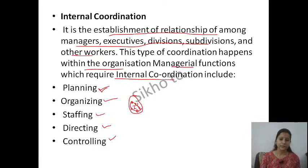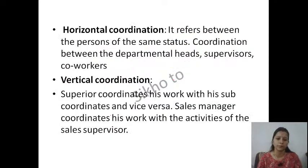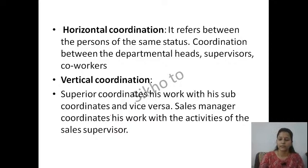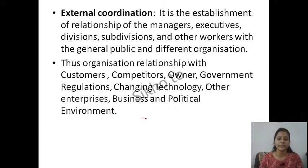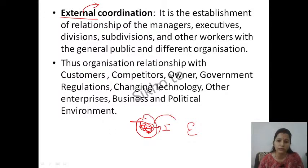Next is external coordination। External word से ही समझ में आता है कि यह बाहर वाला है। Internal यानि अंदर, external यानि बाहर। तो बाहर वालों के साथ जो आपका coordination होगा that will be the example of external coordination। It is the establishment of relationship of the managers, executives, divisions, subdivisions and other workers with the general public and different organizations।